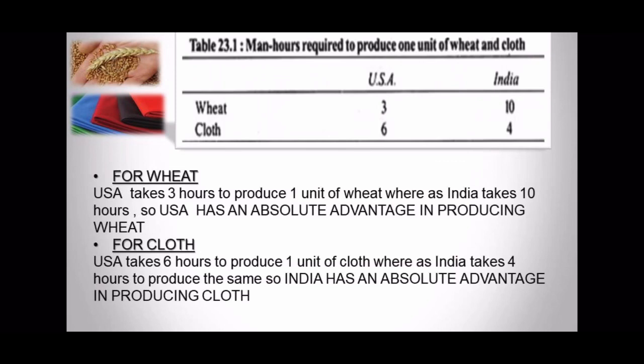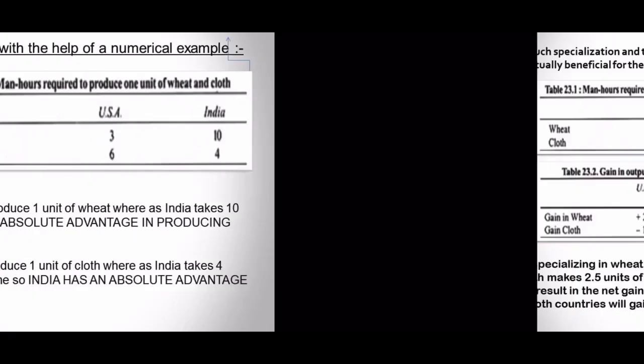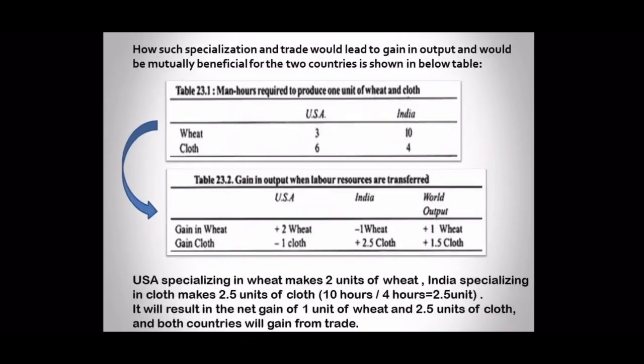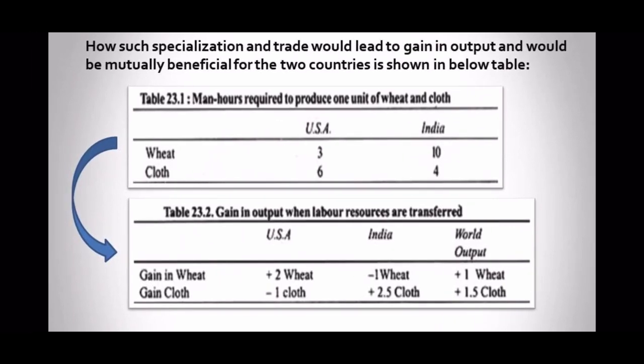So what's happening? The USA is a more efficient producer of wheat, and India has an advantage in cloth. Both will try to trade with each other and both will benefit. World output will also increase. Now let's see how the trading will work. In the next illustration, we will see how such specialization and trade would lead to gain in output and would be mutually beneficial for both countries, as shown in the tables below.